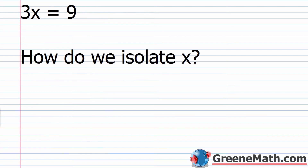Now suppose I give you something like 3x equals 9. How do we isolate x here? You'll notice that I don't have anything being added to x — now I have something that's multiplying x. So how do we isolate x in this case? We need to think about a few different properties first, and then we'll revisit this problem.